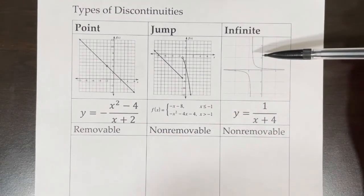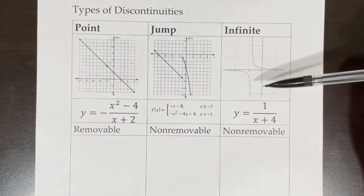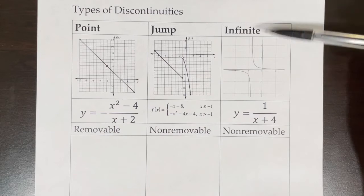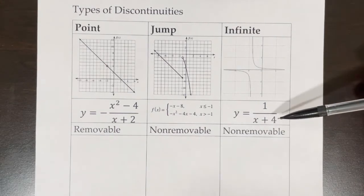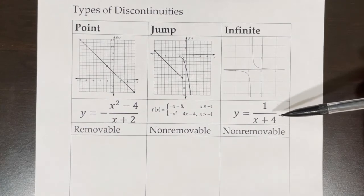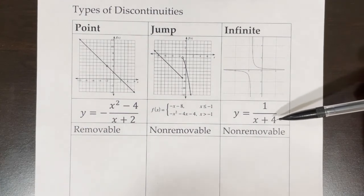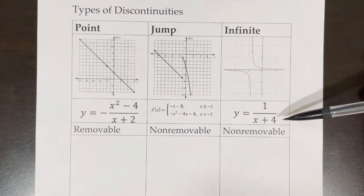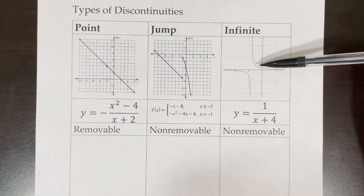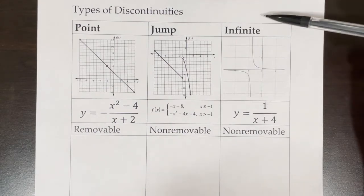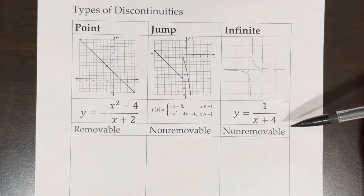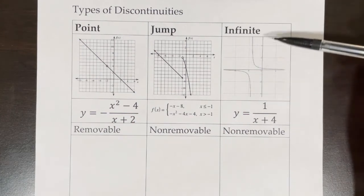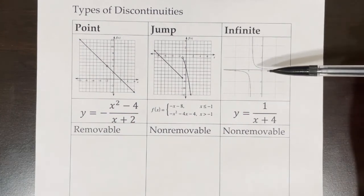Infinite discontinuities are when we have a function approaching infinity or negative infinity. They typically happen with rational functions. In this case we have y equals 1 over x plus 4, which means we have a vertical asymptote at negative 4, and that's why we're seeing the infinite discontinuity here. This is non-removable because there's nothing we can do to make this go away — we can't remove it.